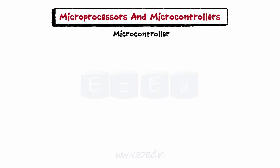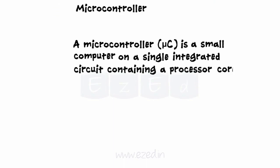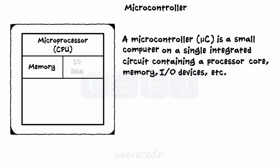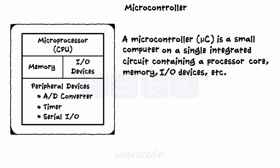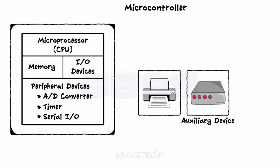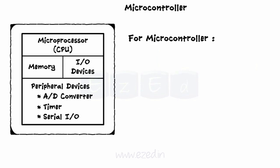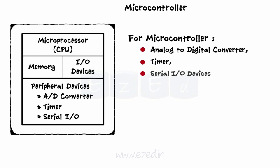Let's study microcontrollers now. A microcontroller, sometimes abbreviated μC, is a small computer on a single integrated circuit containing a processor core, memory, I/O devices, etc. The block diagram of a microcontroller includes different blocks: microprocessor, memory, I/O devices, and peripheral devices. A peripheral device is an auxiliary device such as a printer, modem, or storage system that works in conjunction with a computer. For microcontrollers, peripheral devices include analog to digital converter, timer, serial I/O devices, etc.